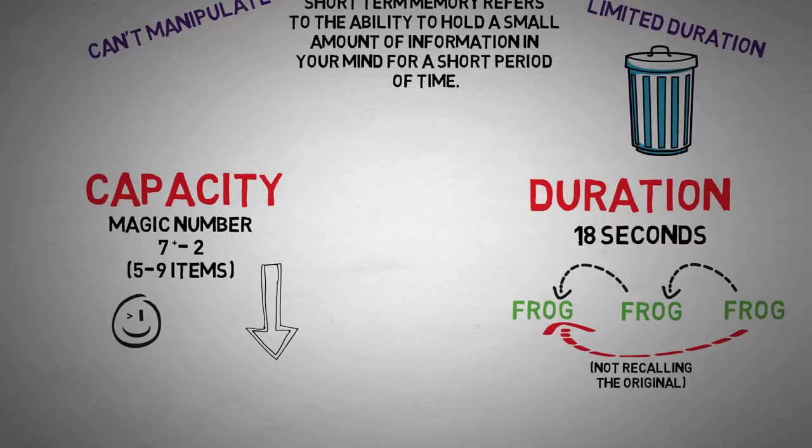So now that we know the capacity and the duration, let's get on to some theories of forgetting. Well, why do we forget? Why do pieces of information leave our short-term memory after a period of time? One of the explanations is the decay theory, also called the trace decay theory of forgetting. The theory is relatively simple. It states that memories decay over time.